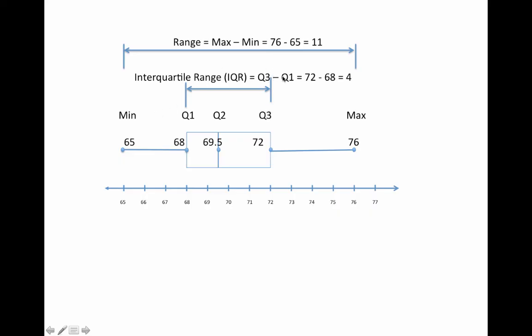The interquartile range is Q3 minus Q1, which is 72 - 68 = 4. So the range gives you the range of the whole dataset, while the interquartile range gives you the range of the middle half of the data.